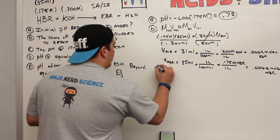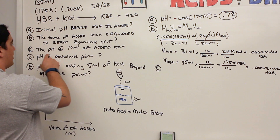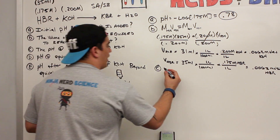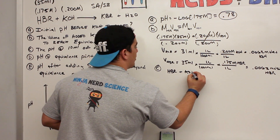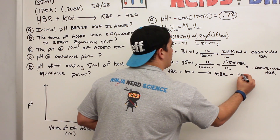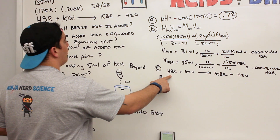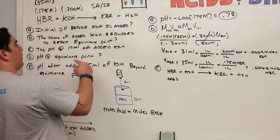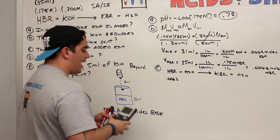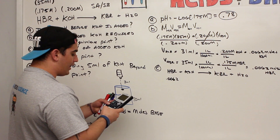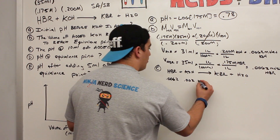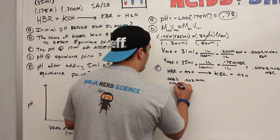Part C: what is the pH at 10 mL of added KOH? The reaction is HBr + KOH → KBr + H₂O. We already know moles of HBr = 0.0062 mol. For 10 mL of KOH: 10 × 0.20 ÷ 1000 = 0.002 moles of KOH. We have less KOH than HBr, so we're working with 0.0062 moles of HBr and 0.002 moles of KOH.